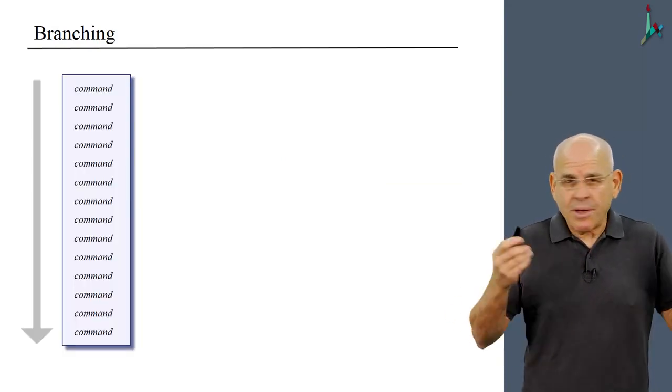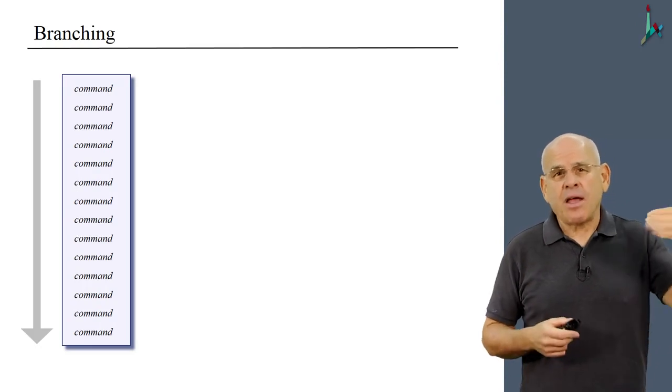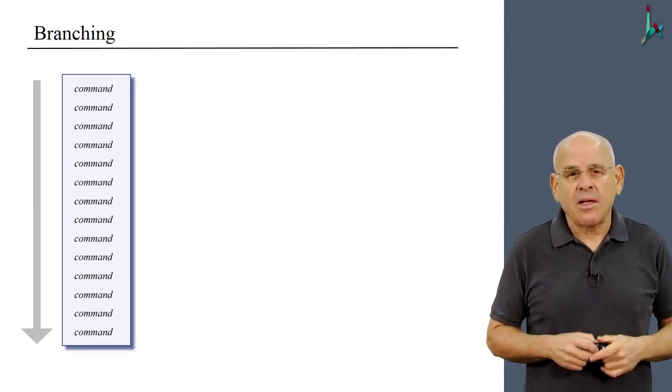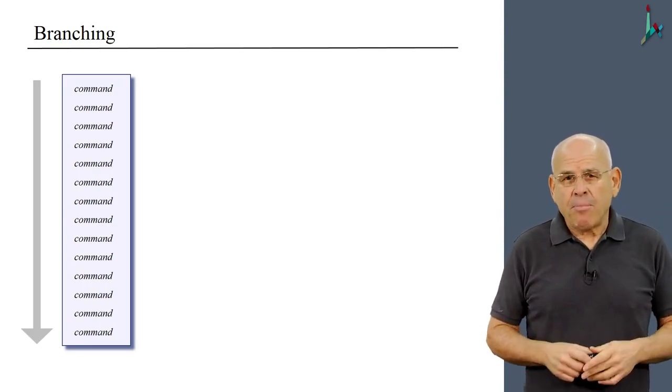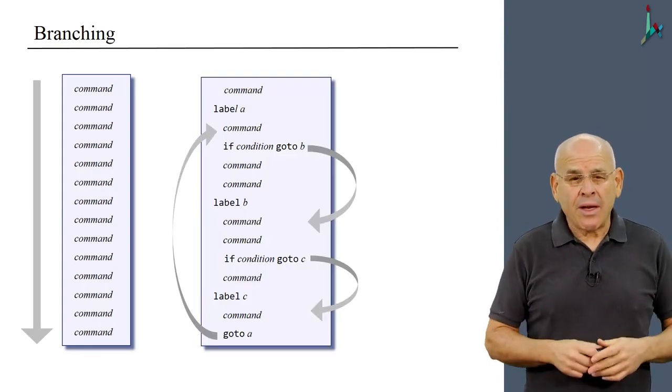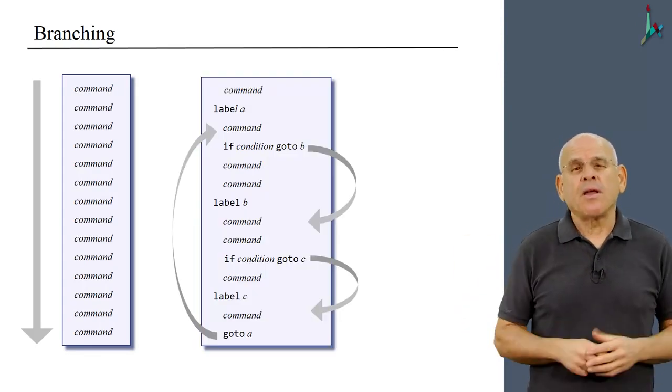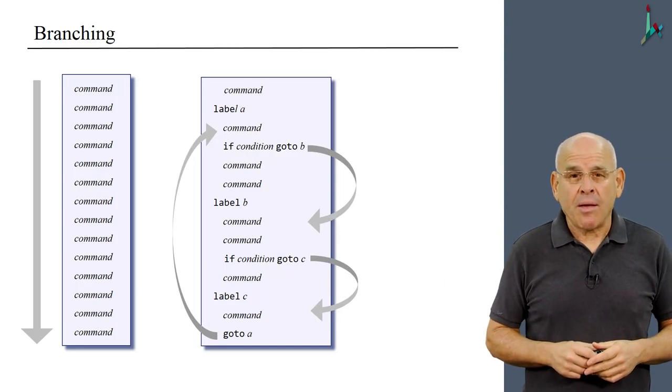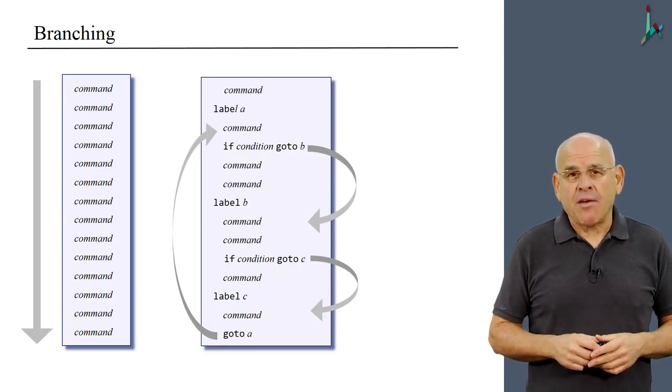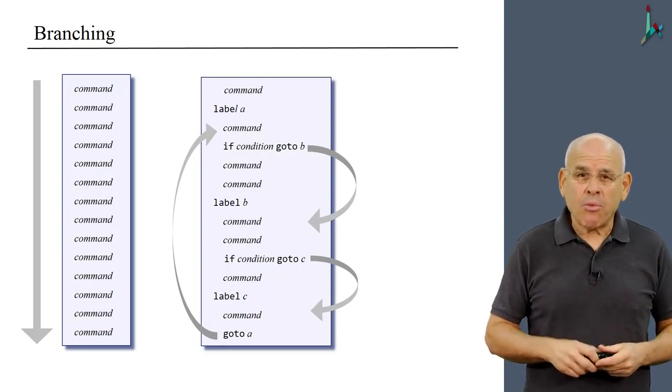Our program was completely linear. Every command executed after the previous one. But with branching, we can introduce all sorts of nonlinear paths in the flow of control of the program. The program can progress linearly, and then all of a sudden there's a goto.